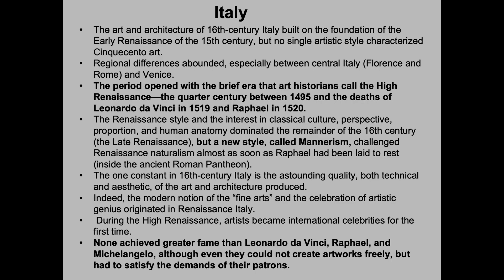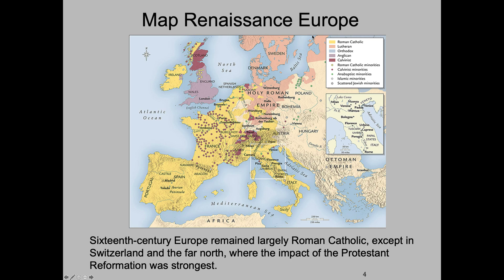This is a map of Renaissance Europe by religion. 16th century Europe remained largely Roman Catholic, except in Switzerland and the far north where the impact of the Protestant Reformation was strongest. Various people became very tired of the practices of the Catholic Church, and someone like Martin Luther wrote against the Catholic Church. As people started leaving the Catholic Church to go to these new Protestant churches, the Catholics got worried. So they instituted the Counter-Reformation, and we'll again see artwork being used by the Counter-Reformation to strengthen their ideologies.